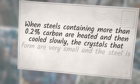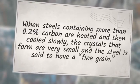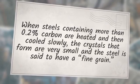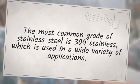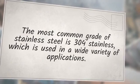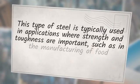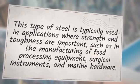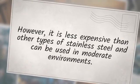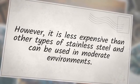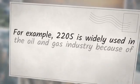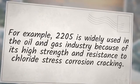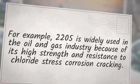When steels containing more than 0.2% carbon are heated and then cooled slowly, the crystals that form are very small and the steel is said to have a fine grain. The most common grade of stainless steel is 304 stainless, which is used in a wide variety of applications — typically where strength and toughness are important, such as food processing equipment, surgical instruments, and marine hardware. It is less expensive than other types of stainless steel. For example, grade 2205 is widely used in the oil and gas industry because of its high strength and resistance to chloride stress corrosion cracking.